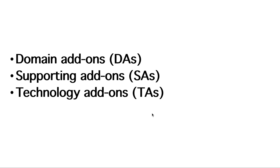DA typically contains dashboards and other views along with search objects that populate them. SA can contain a variety of files but typically does not contain data input. TA often contains data input as well as files that help normalize and prepare that data for displaying in Enterprise Security.